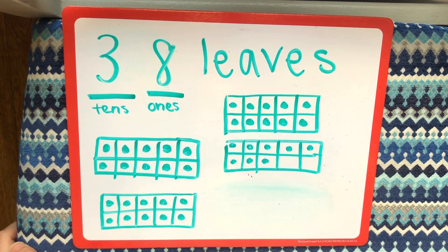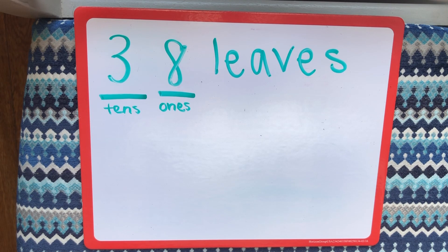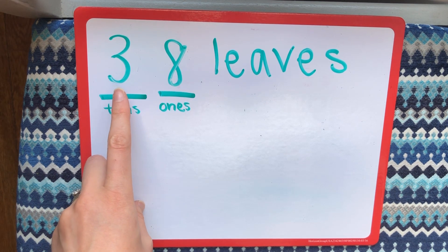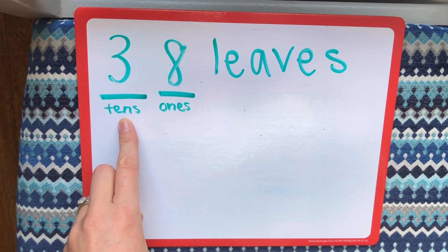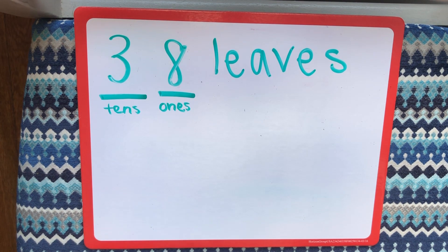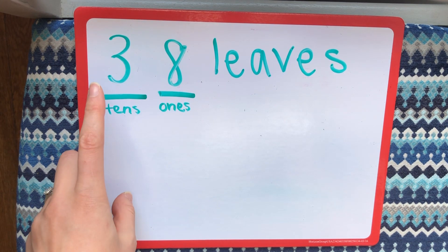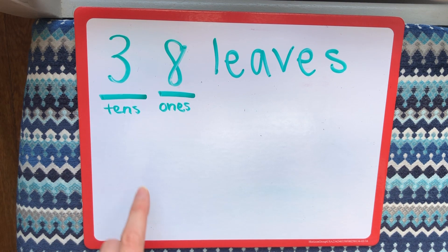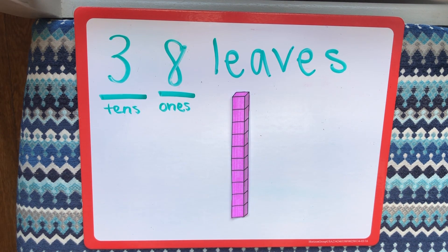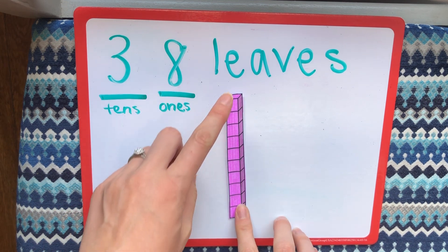Now let's show it another way. I'm gonna represent the number of leaves with base 10 blocks. We already know I have 38 leaves. The 3 is in the tens place so I'll need 3 groups of 10. The 8 is in the ones place so I'll need 8 ones. Let's start with the tens place first — I'll need 3 groups of 10. I know that 1 long is equal to 10 because I can count the number of units on it.